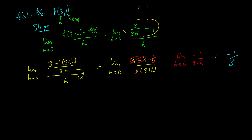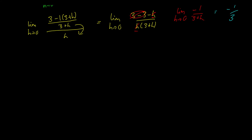This might seem difficult at first, but with a few practice problems you'll understand it. Here's one for you: take y = √x at the point (1, 1), since the square root of 1 is 1. See if you can find the slope — you can use either formula. The first one is probably less threatening. Pause the video and try it.